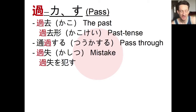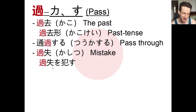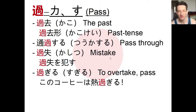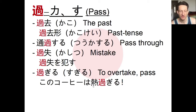Next we have 過失, which means a mistake. We can say 過失を犯す — to make a mistake, to err, or to blunder. Then 過ぎる, just like we saw in the sentence: 濃すぎたコーヒー, coffee that is too strong. 過ぎる means to overtake or to pass. For example, このコーヒーは熱過ぎる — this coffee is too hot.